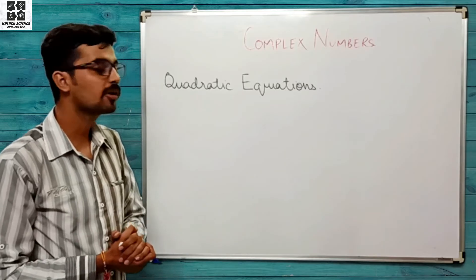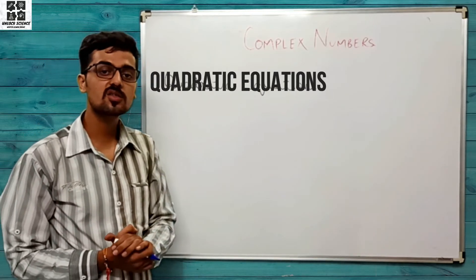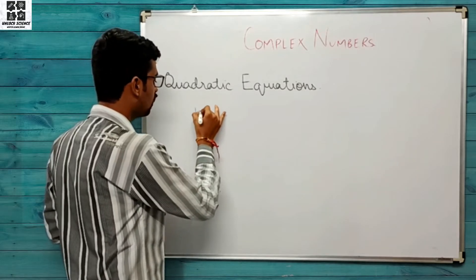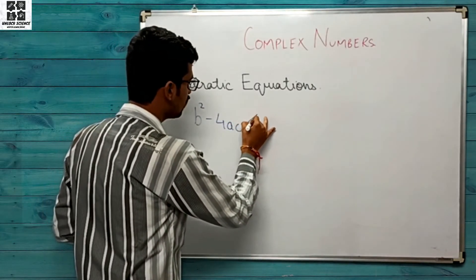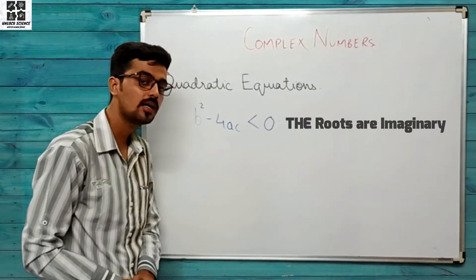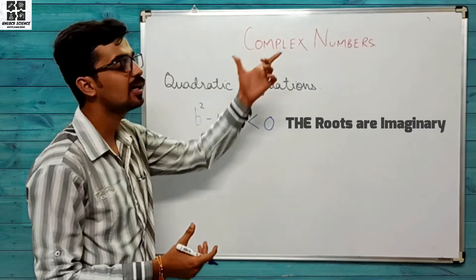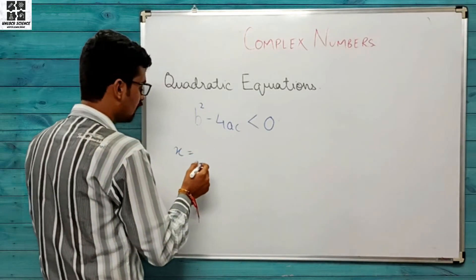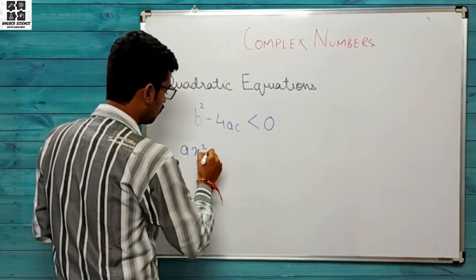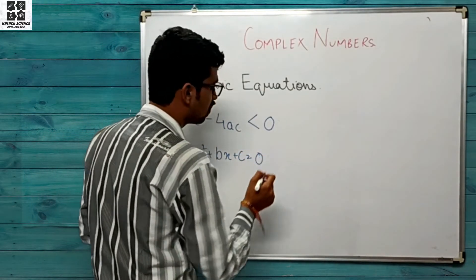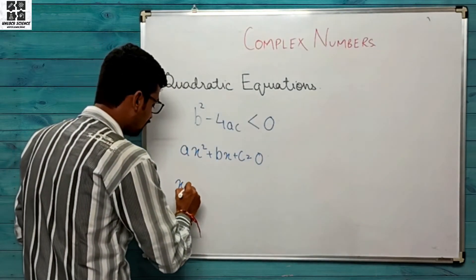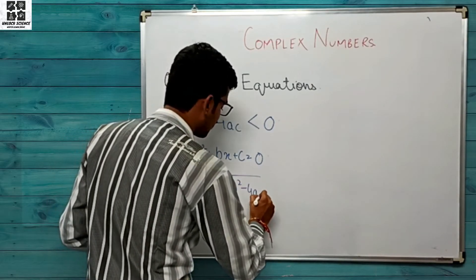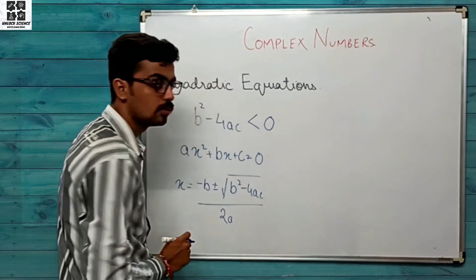We are now on the last topic of complex numbers — quadratic equations. Quadratic equations aapne pehle bhi padhi hain, but ek condition aati thi: agar b² − 4ac < 0 hota tha, toh hum likh dete the ki roots are imaginary. Ab woh imaginary complex numbers mein samjhenge. Shridharacharya formula ke hisaab se: ax² + bx + c = 0 ka x = (−b ± √(b² − 4ac)) / 2a.